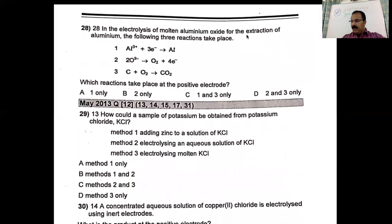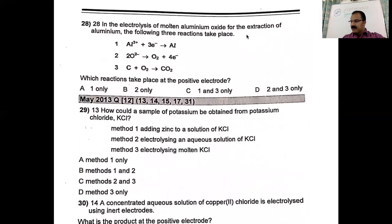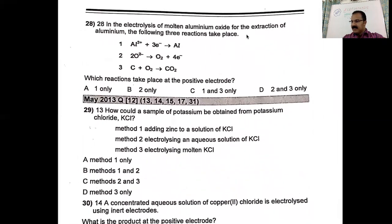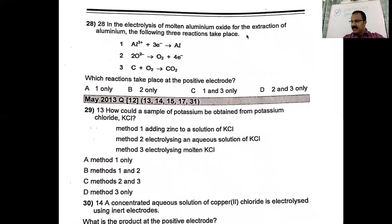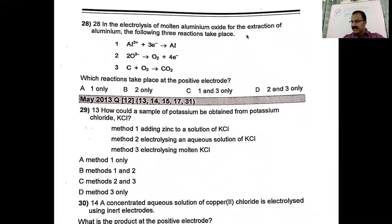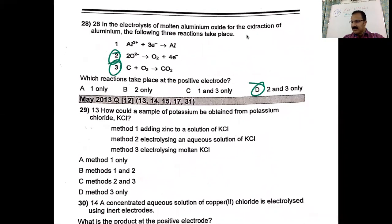In the electrolysis of molten aluminum oxide for the extraction of aluminum, three reactions are given. Which reaction occurs at the positive electrode? We already answered this — equations two and three occur at the anode. The correct choice is D.